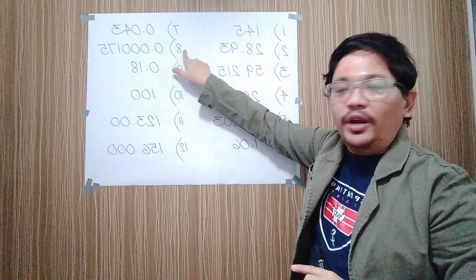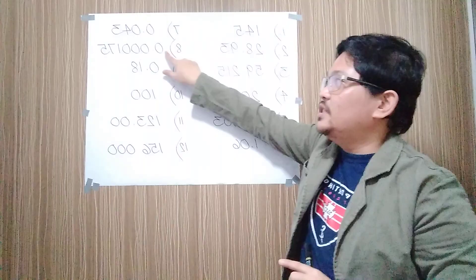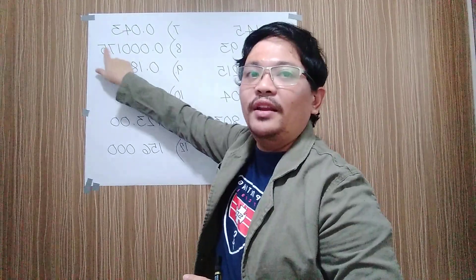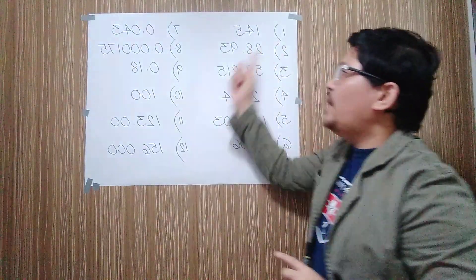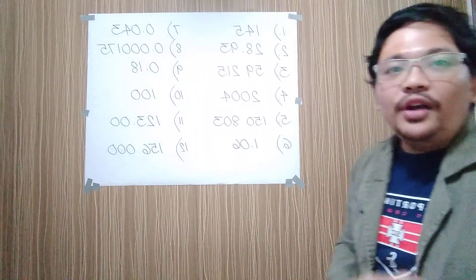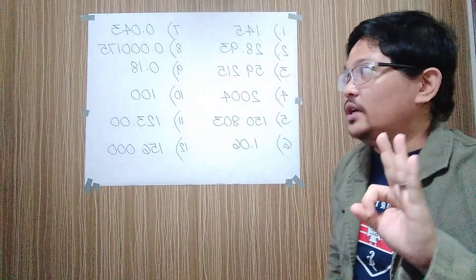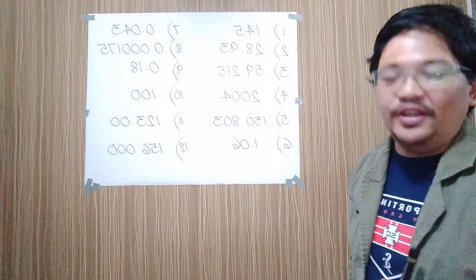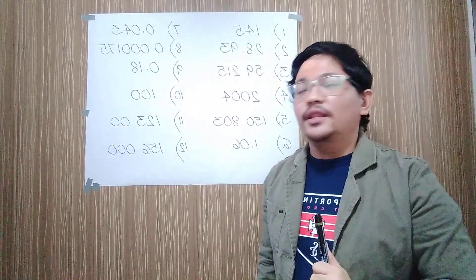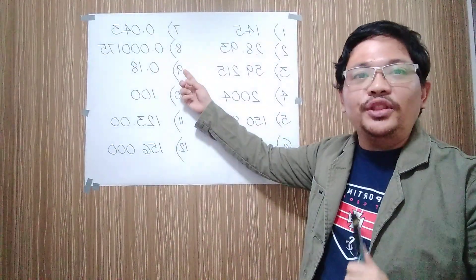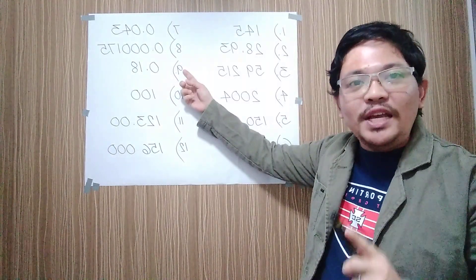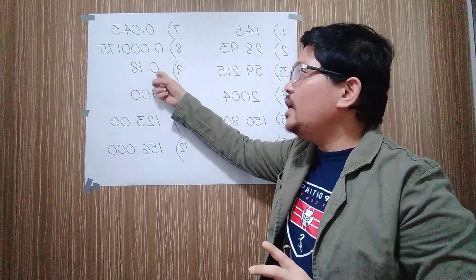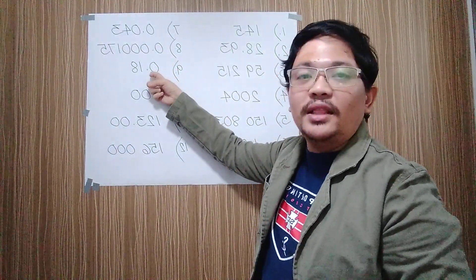For number eight, the given is 0.000175. Definitely, for problem number eight, there are three significant figures only, because the four leading zeros or the four beginning zeros are not significant. For number nine, the given is 0.18. For 0.18, there are two significant figures only, because the leading zero here is not significant.